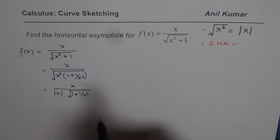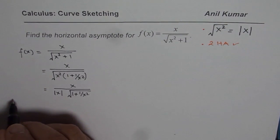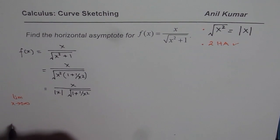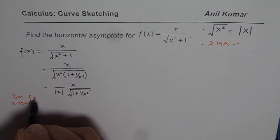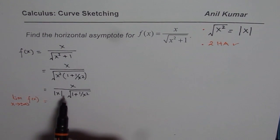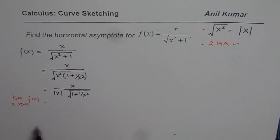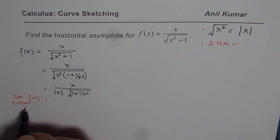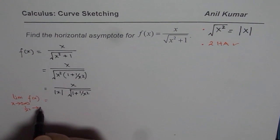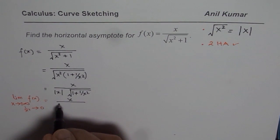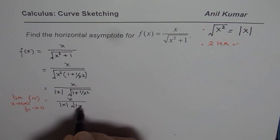When we talk about horizontal asymptotes, we are trying to see what happens to the function when the limit x approaches infinity — positive or negative. In this particular case, the function is x over |x| divided by square root of 1 plus 1 over x squared. Now if x is approaching an infinitely large value, what happens to 1 over x squared? It approaches 0. Therefore, we can write this function as it approaches an infinitely large value — it equals x over |x| times square root of 1 plus 0.